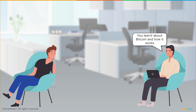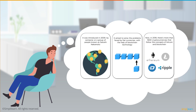We also learned about Bitcoin and how it works. It was introduced in 2009 by someone or a group of pseudonymous people known as Satoshi Nakamoto. It aimed to solve the problems faced by fiat currencies with the help of blockchain technology, introducing a new asset class of cryptocurrencies for day-to-day transactions. As of 2018, there are more than 1600 cryptocurrencies that follow the concept of Bitcoin and blockchain.